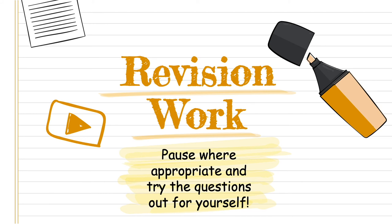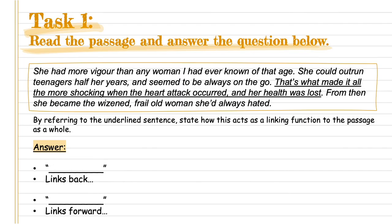You might be very confident with linking questions now. If you would still like more practice, watch on — we're going to do some revision work involving you pausing and trying the questions yourself. Task one states: read the passage and answer the question below. The question says: 'by referring to the underlying sentence, state how this acts as a link function to the passage as a whole.' The passage says: 'She had more vigour than any woman I had ever known of that age. She could outrun teenagers half her years and seem to always be on the go. That's what made it all the more shocking when the heart attack occurred and her health was lost. From when she became the wizened, frail old woman she'd always hated.'